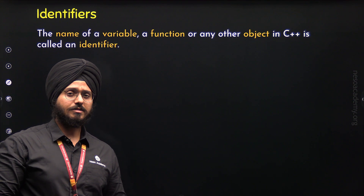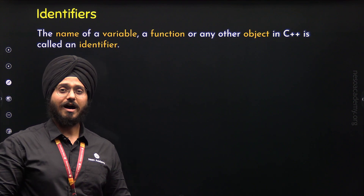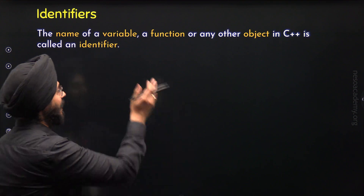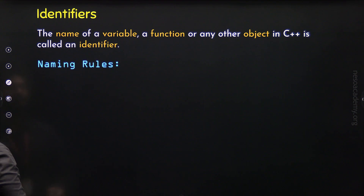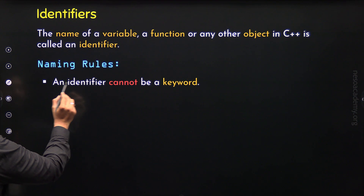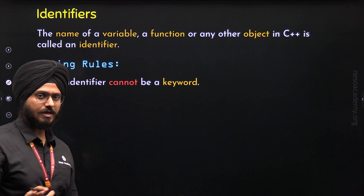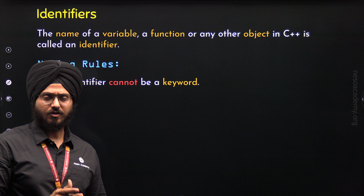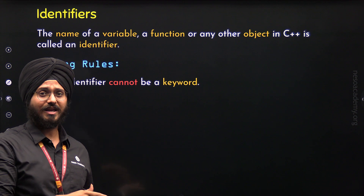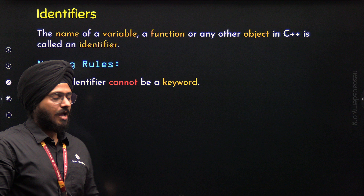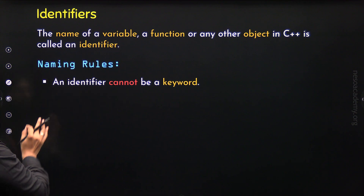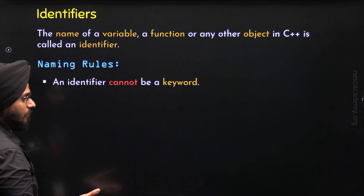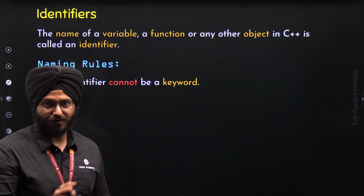Now let's understand some of the rules associated with Identifiers, that is, some of the naming rules for these entities. Rule number 1 is: an Identifier cannot be a Keyword. This means we cannot use a Keyword in place of an Identifier, because Keywords are special words with special meaning and we cannot use them as Identifiers.